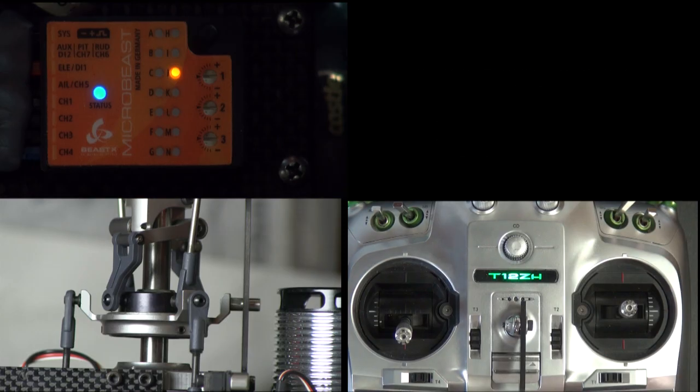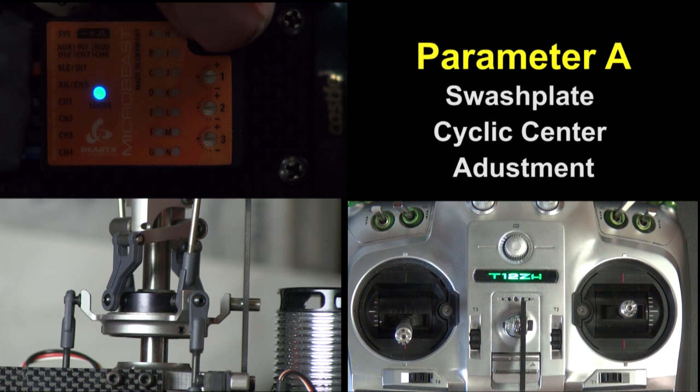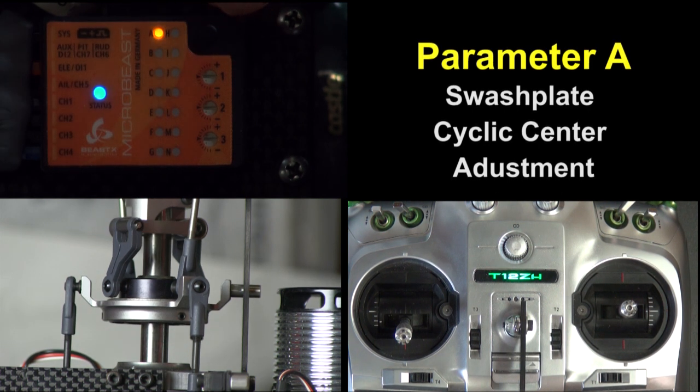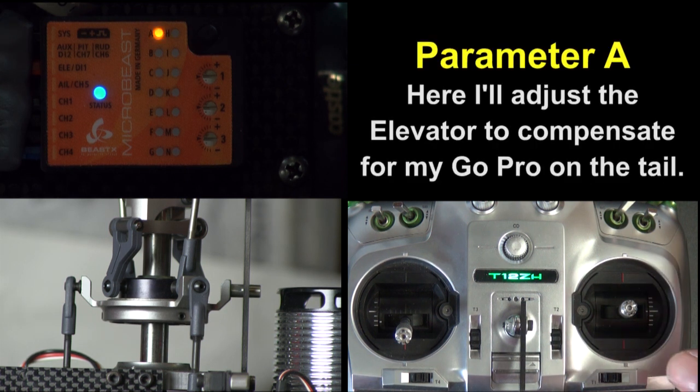But for now, let's do that adjustment. Enter the parameter menu by pushing the button until the A LED flashes quickly and then let go of the button.